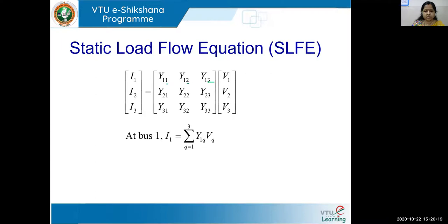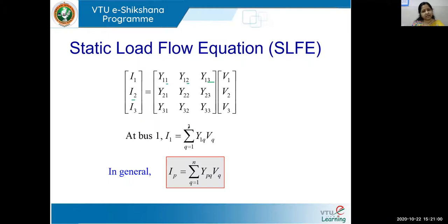So I₁ = Σ(Q=1 to 3) Y₁Q·VQ. Similarly, I₂ = Σ(Q=1 to 3) Y₂Q·VQ, and I₃ = Σ(Q=1 to 3) Y₃Q·VQ. In general, for a system with n buses, we write IP = Σ(Q=1 to n) YPQ·VQ. This is the mathematical model written in generalized form for n buses.